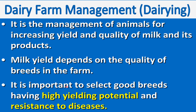Milk yield depends on the breeds of the animals, so it is important to select good breeds. Which breeds are considered good breeds? The animals which have high yielding potential — meaning which can provide high quantity of milk — and also the animals having resistance power to diseases. So animals which are disease-resistant and which can provide more milk are considered good breeds. Selecting good breeds of animals is the first step for dairy farm management.